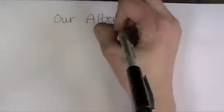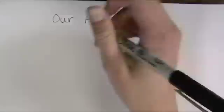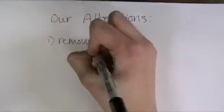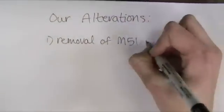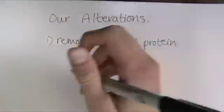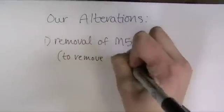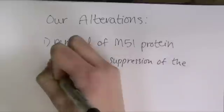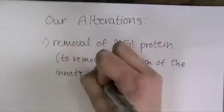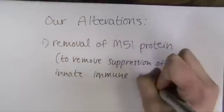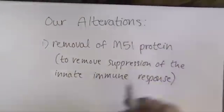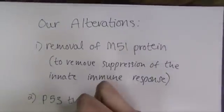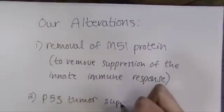Here is a drawing of our modified VSV. Our alterations include the removal of the matrix, or M51, protein. This protein functions in the suppression of the innate immune response. The lack of this protein within the virus allows the VSV to specifically target and kill cancerous cells.